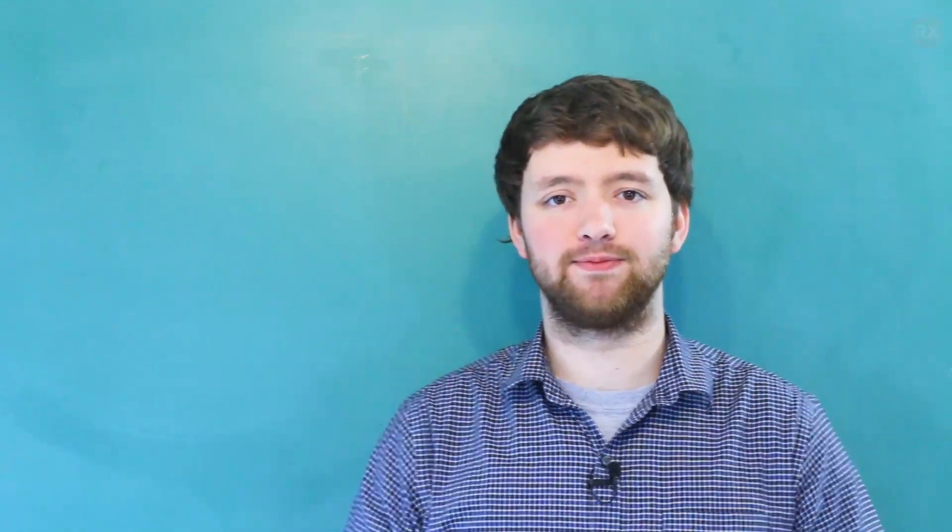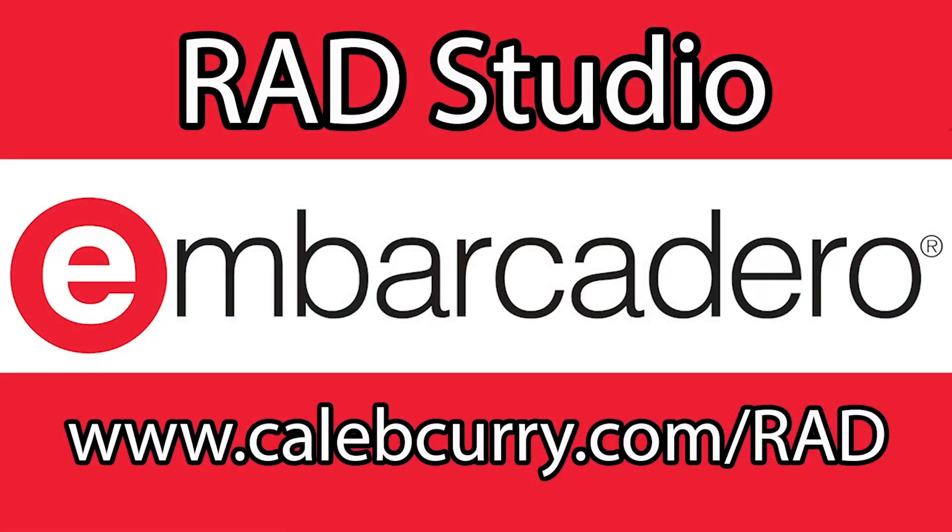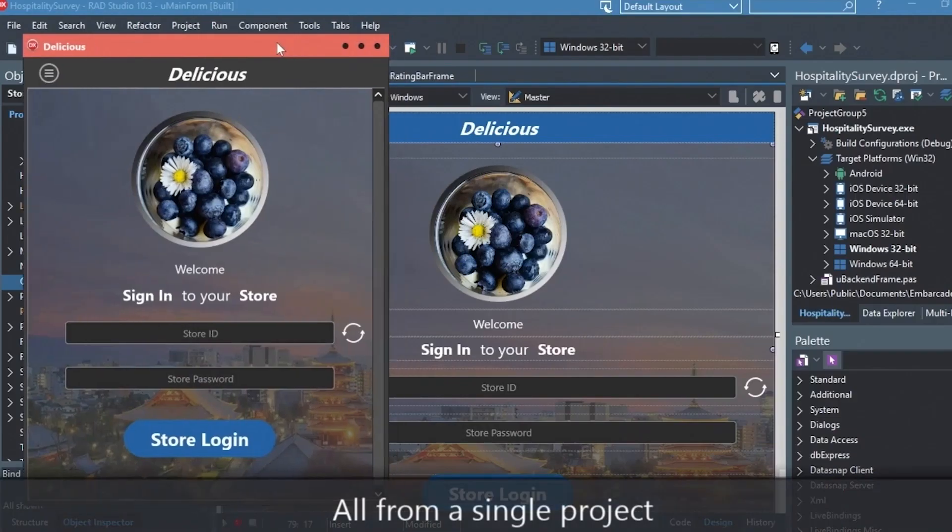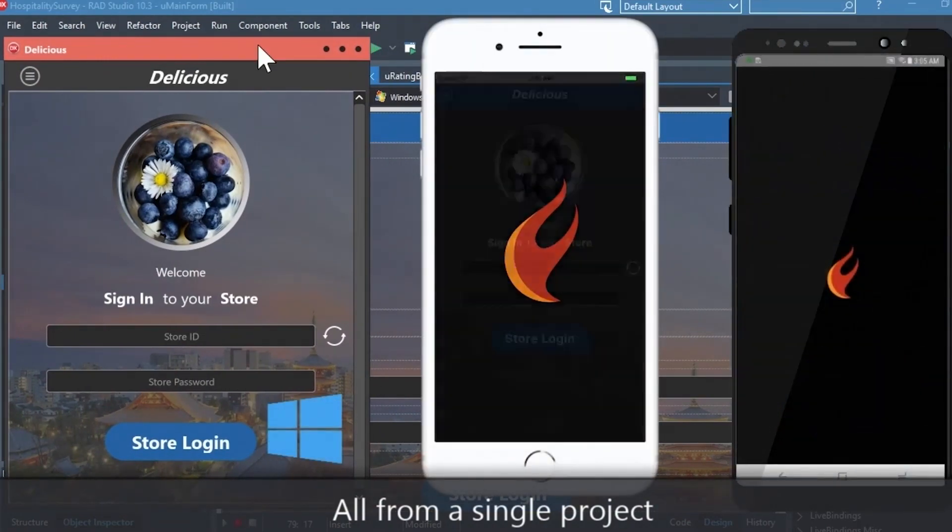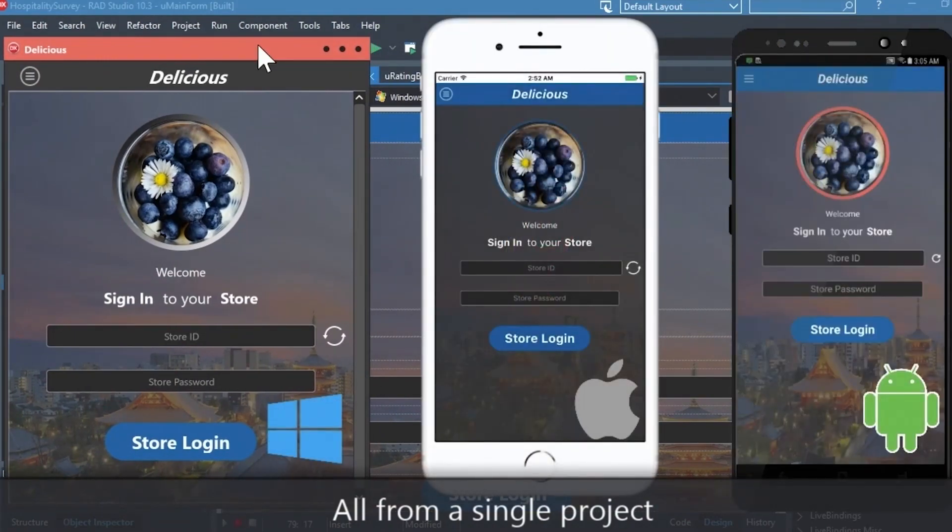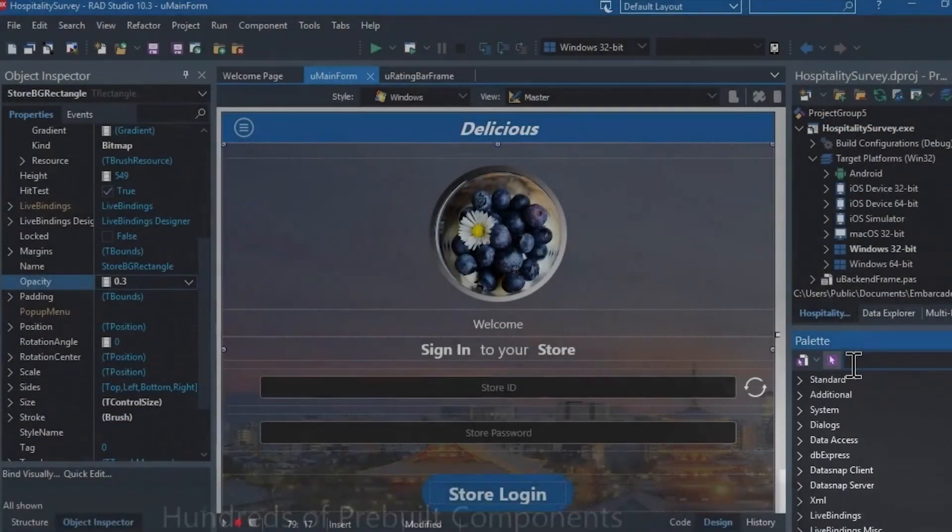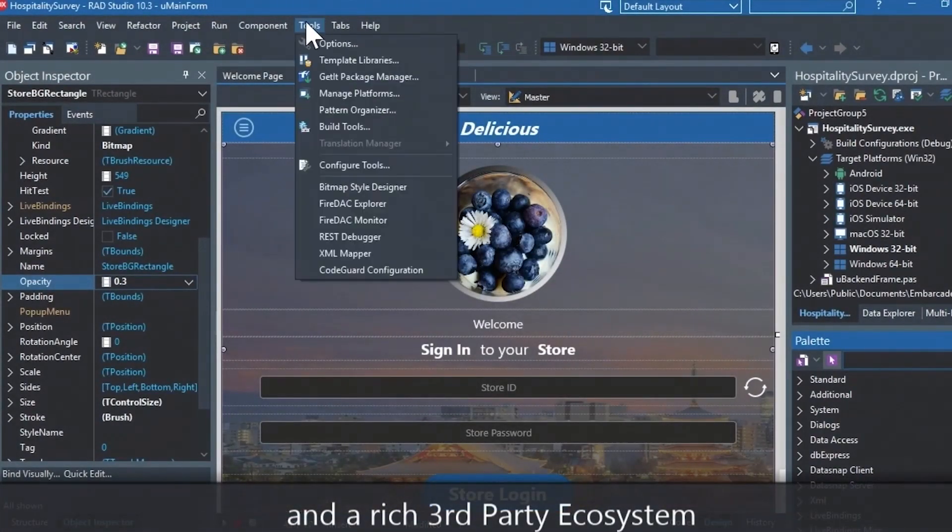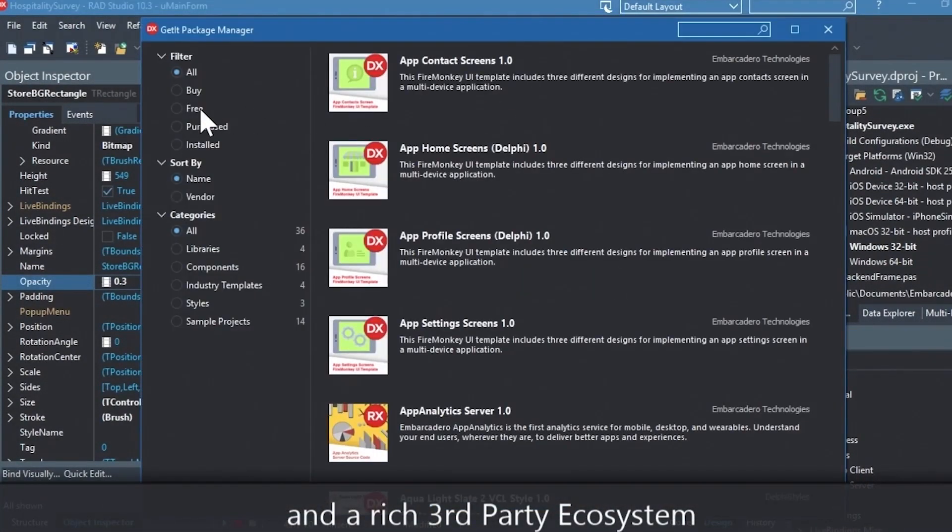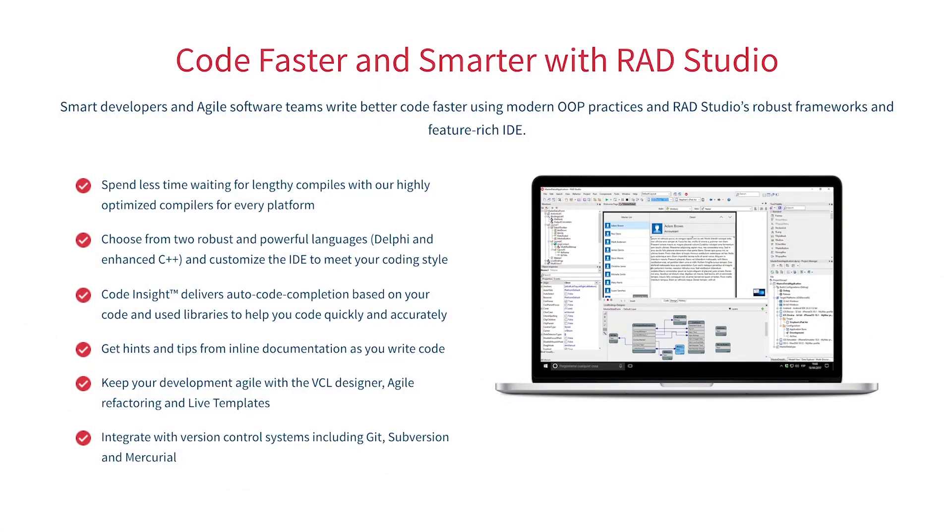But first you need to check out our sponsor Embarcadero Rad Studio. Rad Studio is the IDE of choice for C++ development. Quickly build native mobile and desktop applications from a single C++ code base and deploy to Windows, Mac, iOS, and Android. With Rad Studio, user interface design has been made easy with hundreds of pre-built components for cross-platform development. You can easily integrate with popular source control management systems, databases, APIs, and you can make your life easier with numerous third-party extensions. Let Rad Studio do the heavy lifting when it comes to C++ development. Give it a go with a free trial by following the link in the description.